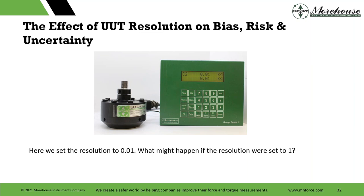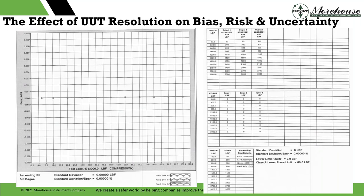This is a competitor — it shall remain nameless — but I have to call this to attention because it's exactly what happens when we have a coarse resolution: all of our measurements at some point become perfect, right? Standard deviation zero. Standard deviation to the span is zero percent. This is an ASTM cal, but everything's perfect — no error whatsoever. That one was set to a half-pound resolution on a 3,000-pound load cell — 6,000 counts. Very, very low.